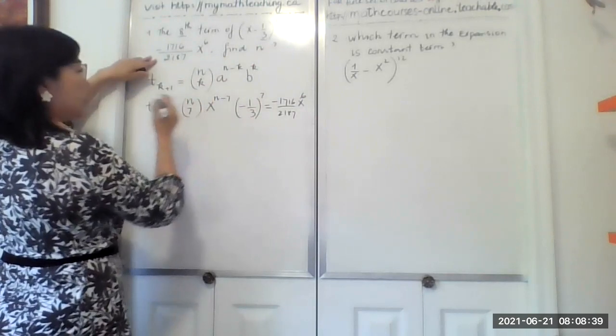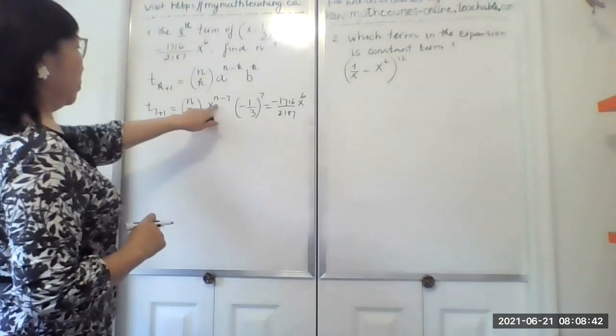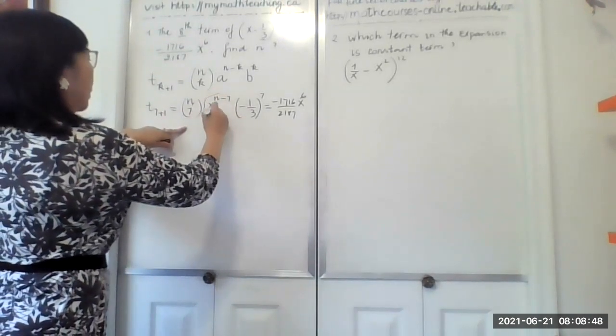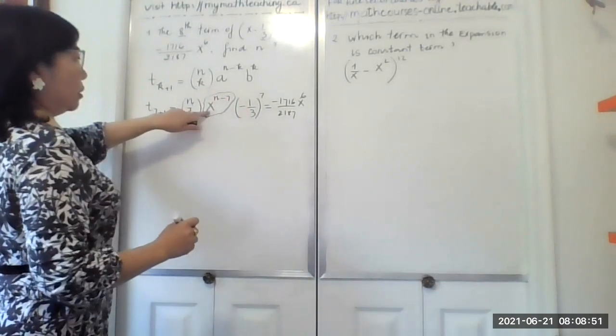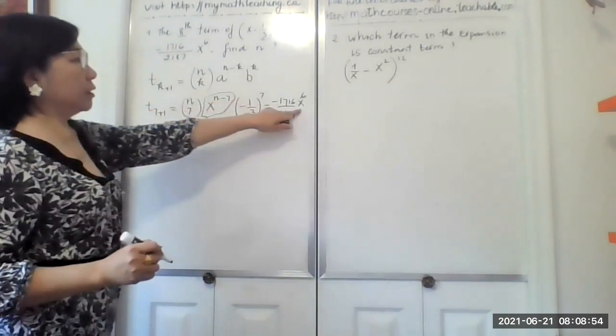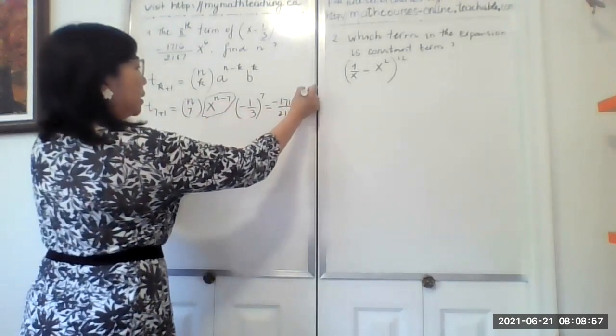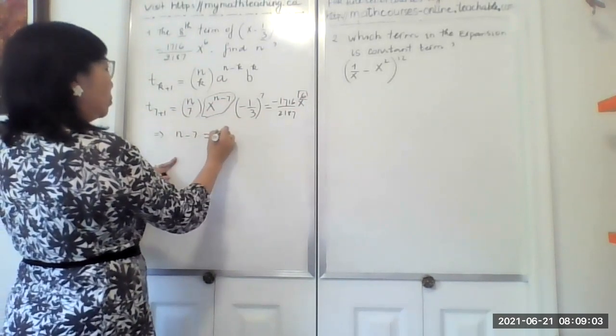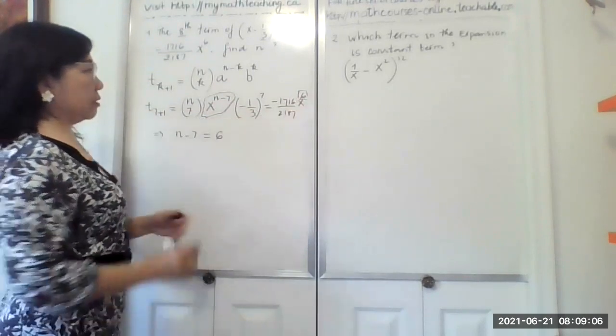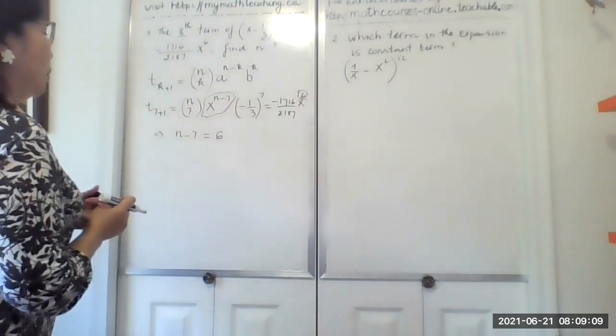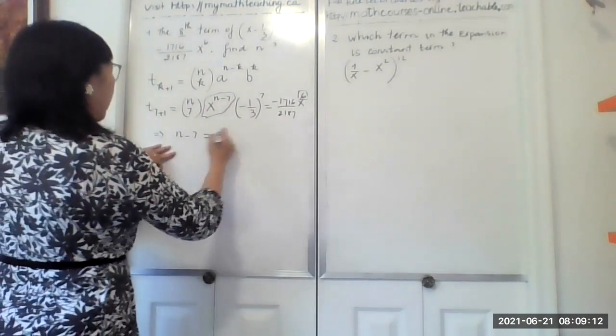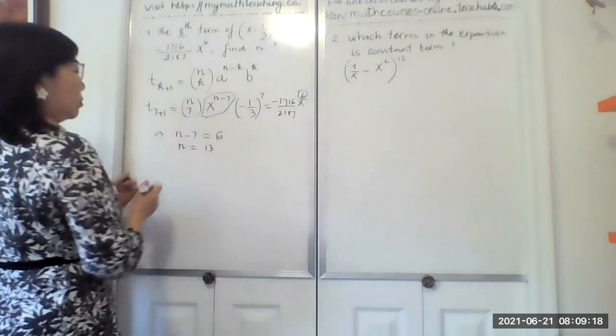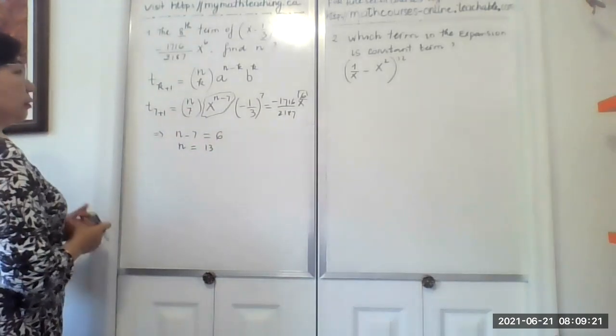We have n choose 7, x to the power of n minus 7. If we have x to the power of n minus 7, it must equal power 6 here. So we will say n minus 7 equals 6 based on this answer. So what n equals? In this equation, n will equal 6 plus 7 is 13. So n equals 13.